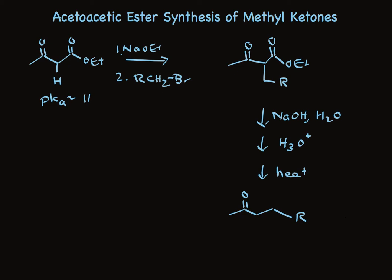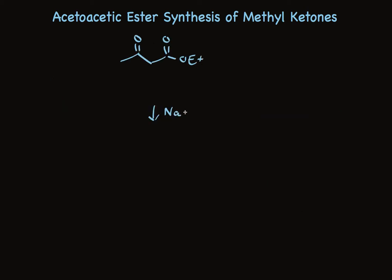Let's take a look at the mechanistic detail and then you'll be able to remember this better. When this is treated with ethoxide, the hydrogen between the two carbonyls is much more acidic than any other. This forms an enolate that is stabilized by resonance. Not by one carbonyl, but by two.